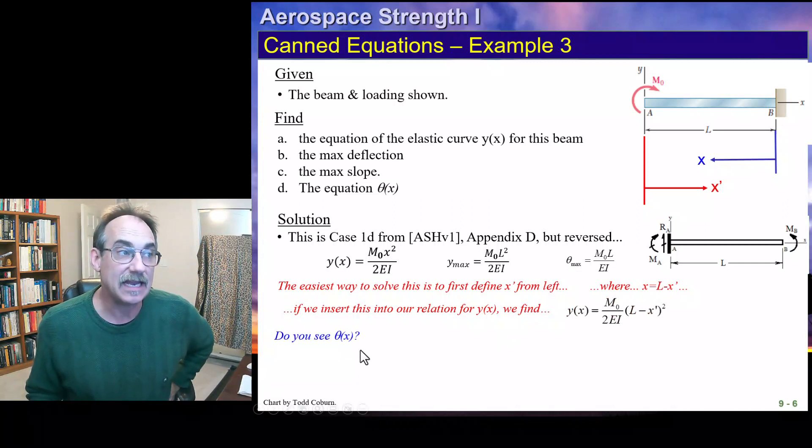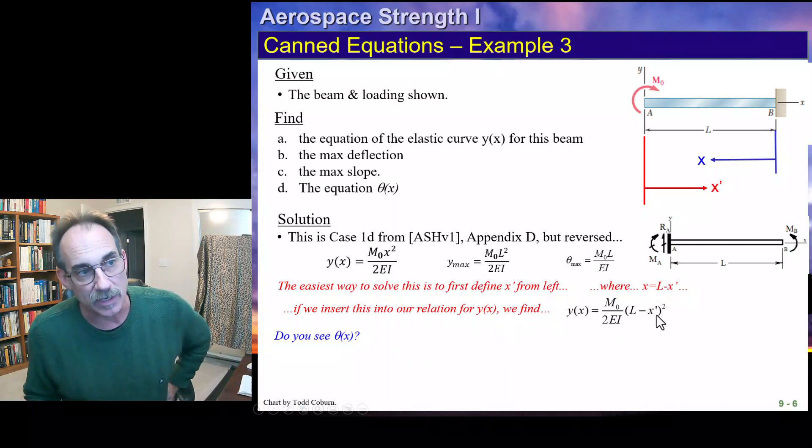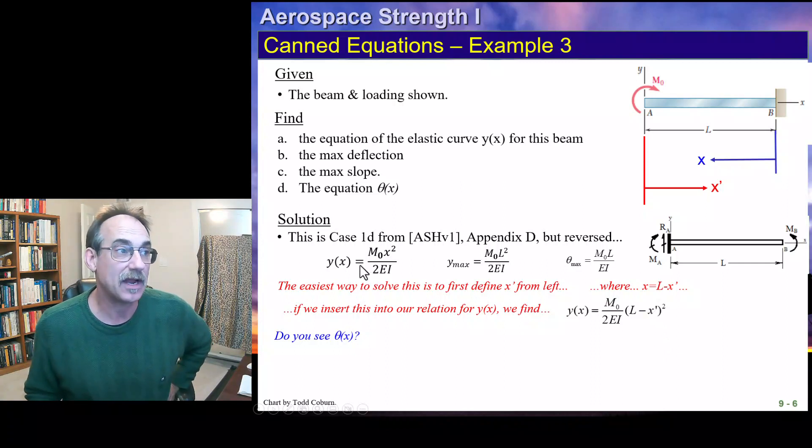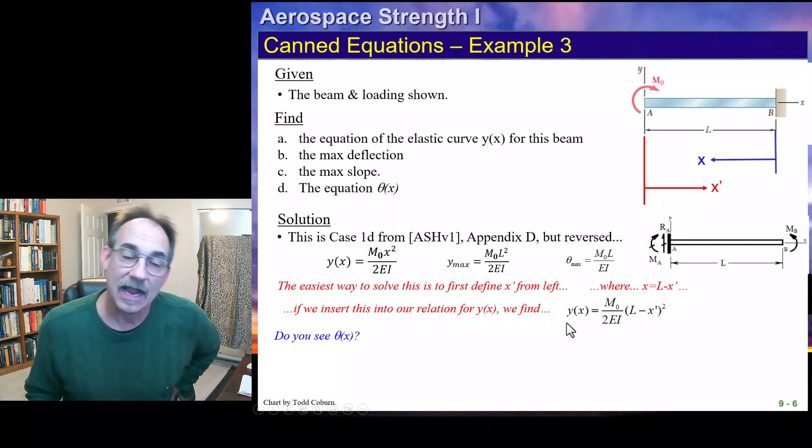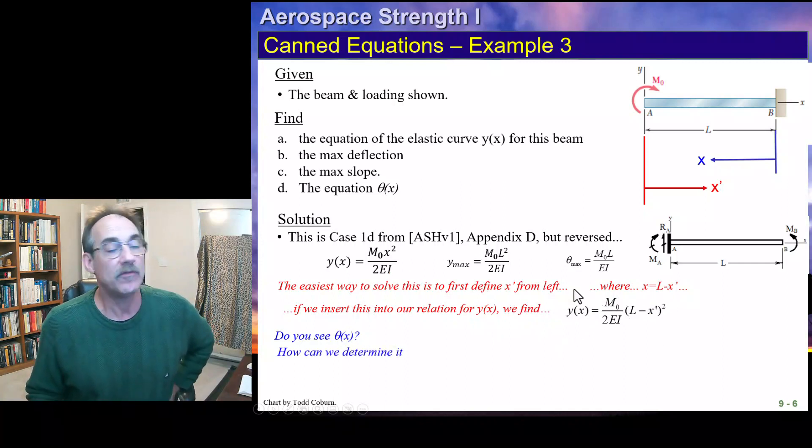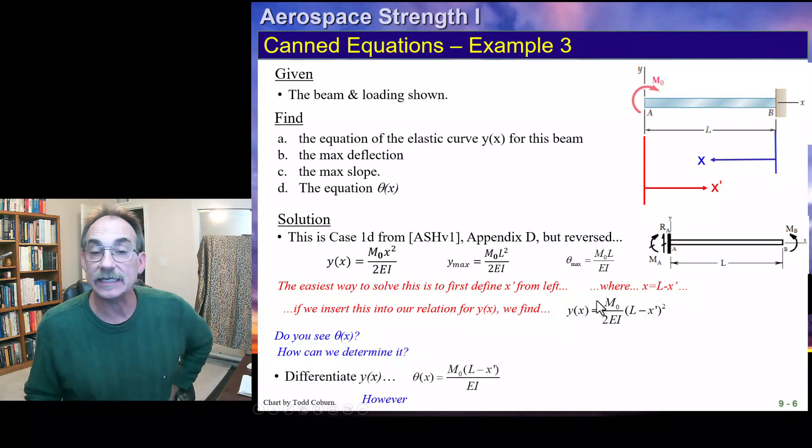This is probably the easiest way to solve it. Now, the easiest way to get the theta here is probably going to go back. Many of us will get screwed up if we try to differentiate that with that x prime. So what you can do is go back to the y of x, differentiate that to get the theta, and then insert your substitution of x equals l minus x prime to get the equation for that theta. Got that? And it would look like this. See how that works?